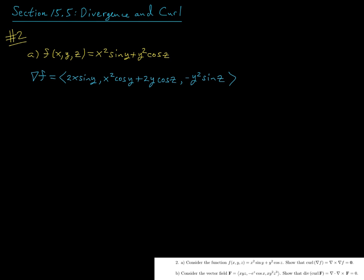First I'll go ahead and compute the gradient. Take the x derivative of f for the i component and you get two x sine y. The y derivative for the j component gives x squared cos y plus two y cos z. And then the z derivative for the k component gives us minus y squared sine z.